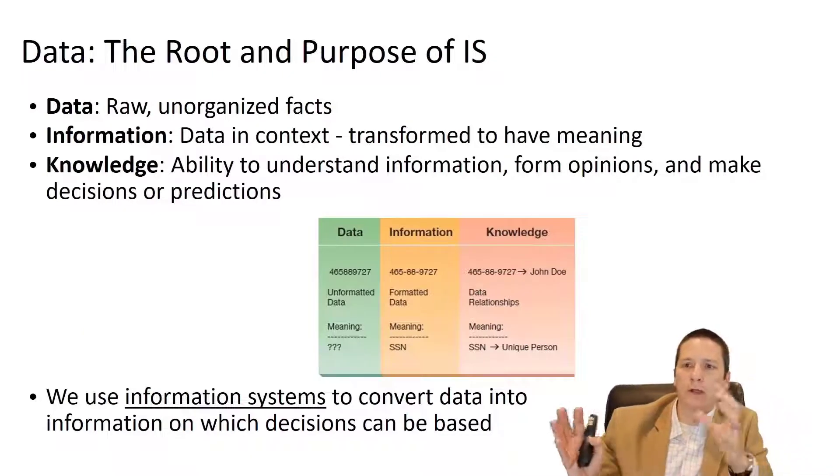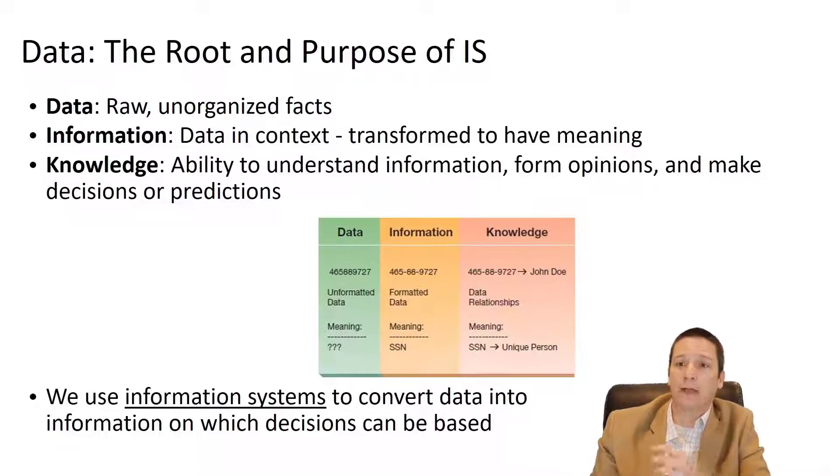Data is raw and unorganized. Information is data that is in context, transformed to have some meaning. And then knowledge is the ability to understand information and form opinions and make predictions and decisions and things like that.